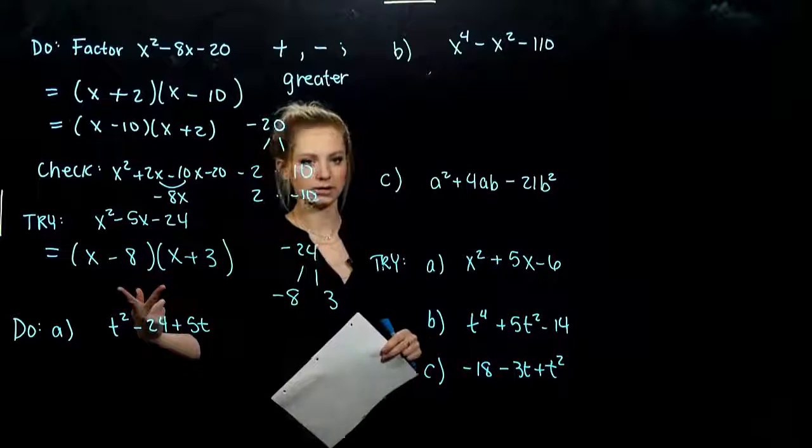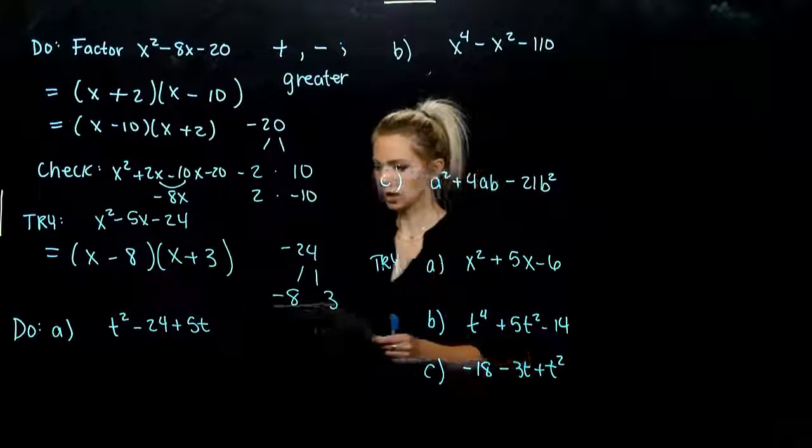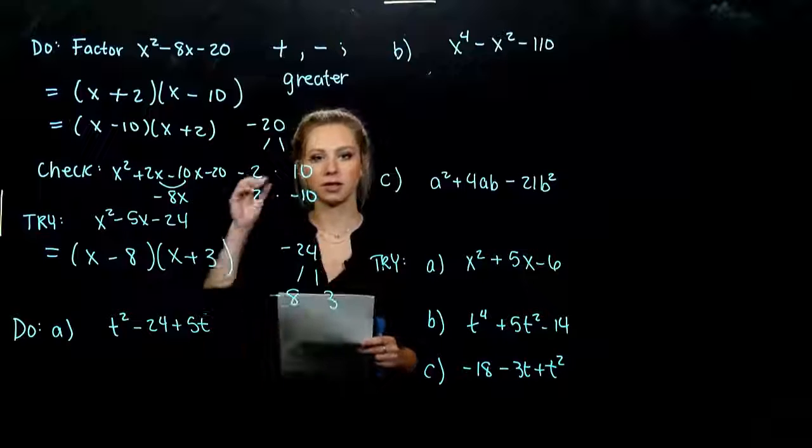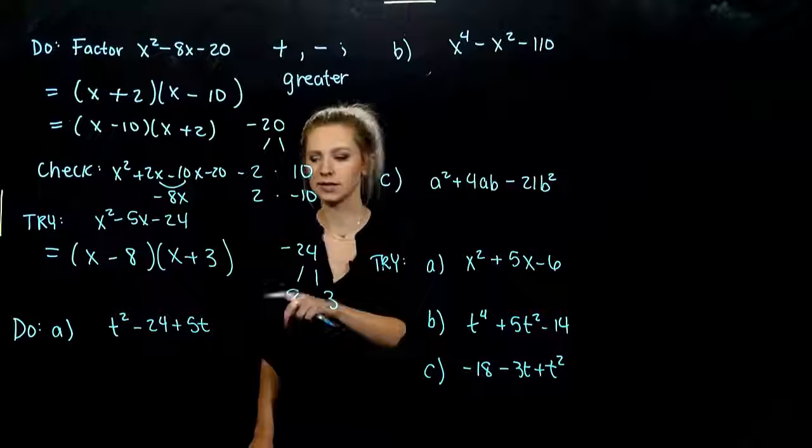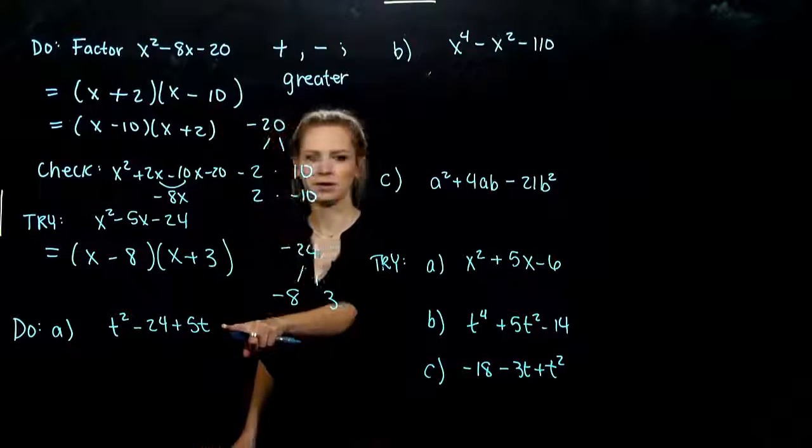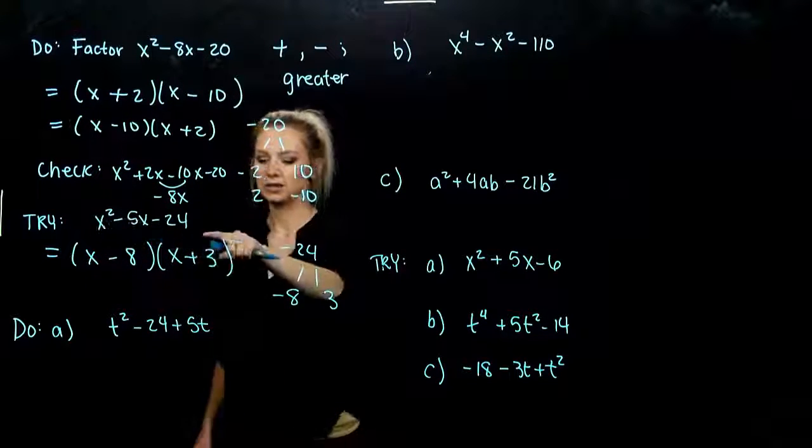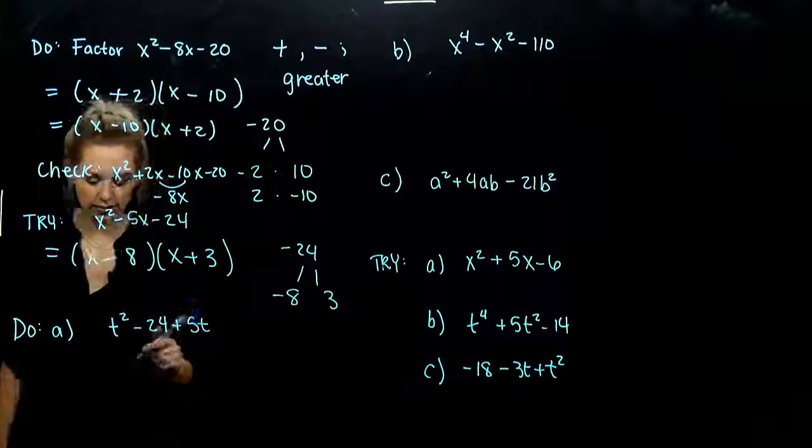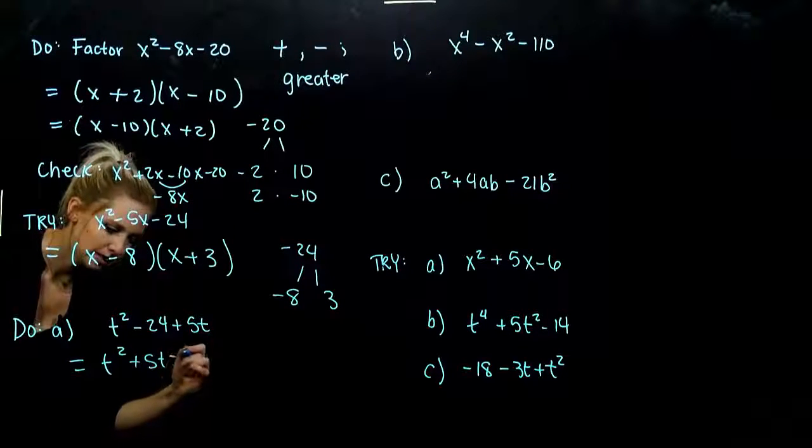So this is how it factors. And again, order doesn't matter. Multiplication is commutative, we can switch it around. And you can always check, foil it out, make sure you get back to the original polynomial that we started with. So looking at a few more challenging cases now that we can handle all of the different combinations of signs here. Looking at this first one, what's different? How has this been different than what we've seen before? In these guys, we've always had descending order, but it's kind of mixed around down there. So the first thing that we want to do is rewrite the order in descending.